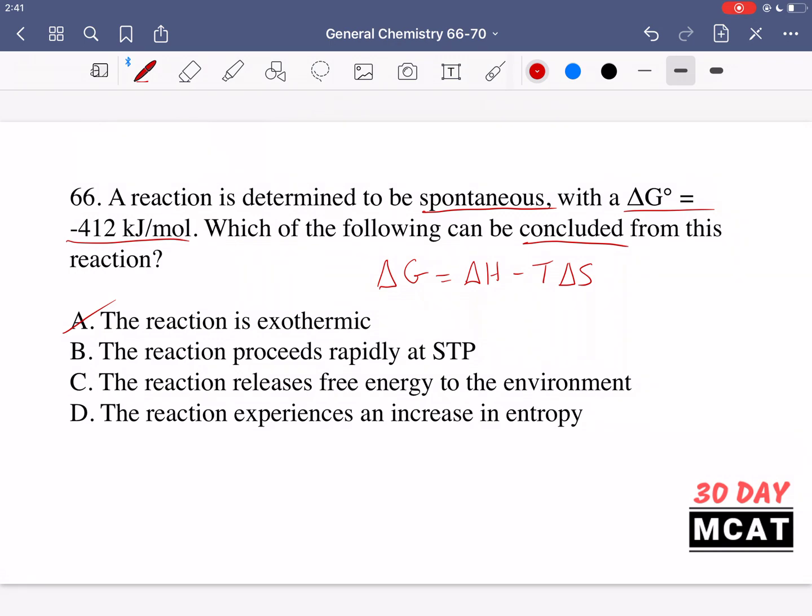Option B is saying the reaction proceeds rapidly at standard temperature and pressure. That's incorrect. This part here, the rapidly. Make sure you don't confuse spontaneous with rate. Spontaneous is just telling us that if we leave this reaction under STP, then it's going to go from reactant to products.